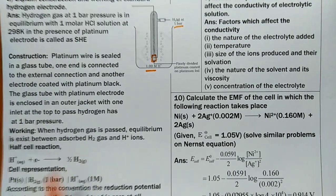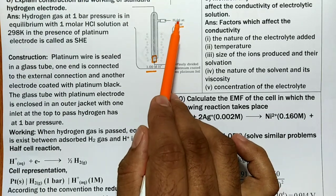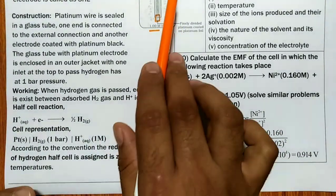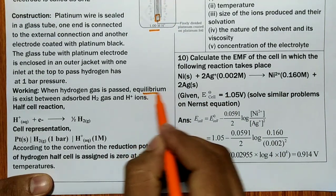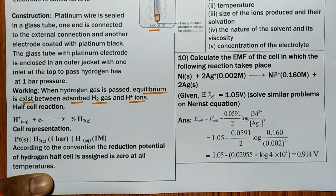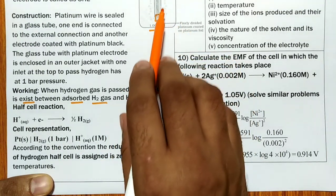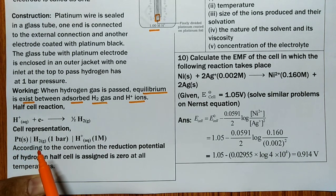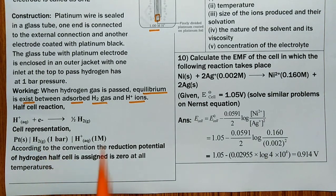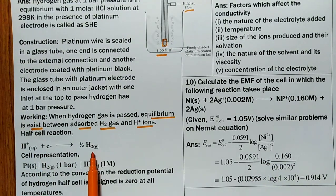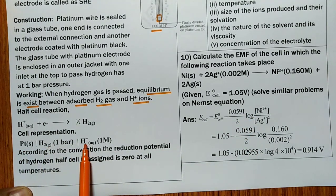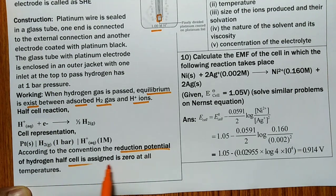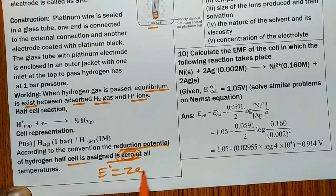The outer jacket on the glass has one inlet at the top through which hydrogen gas is passed at one bar pressure. There is an equilibrium established between adsorbed hydrogen gas and H⁺ ions. The half-cell reaction is: H⁺ + e⁻ → ½H₂. According to convention, the standard reduction potential E° of the SHE is considered as zero.